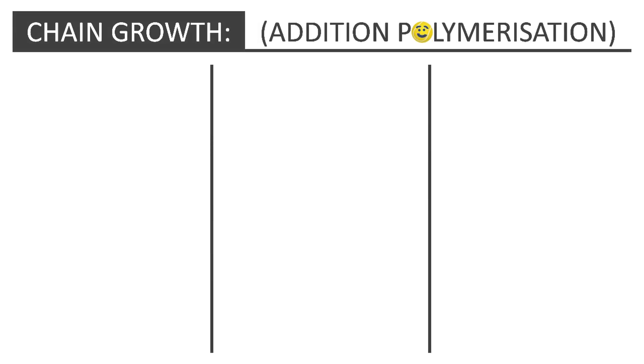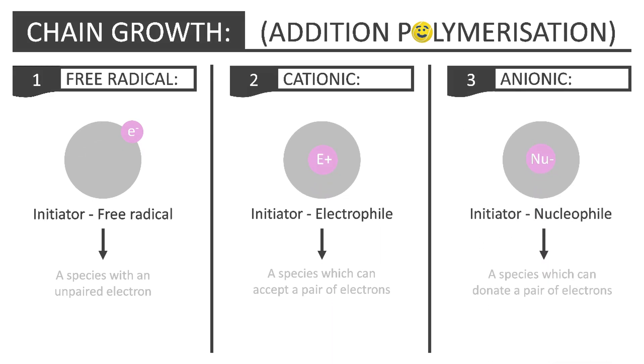Chain-growth, or addition polymerization, involves the addition of alkene monomers to the end of a growing chain. Chain-growth polymers can be synthesized by three different methods: free-radical, cationic, and anionic polymerization.